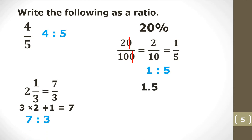Now this one is the decimal 1.5. To convert that into ratio: 1.5 written as a fraction is 3 over 2. To write in ratio form, it is 3 to 2. That's all it is. You can convert forward and backward.